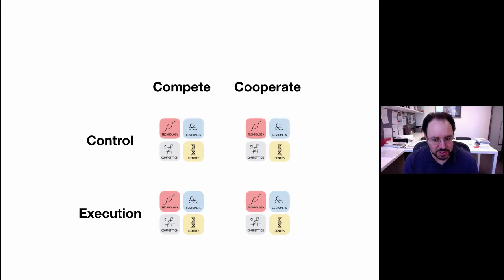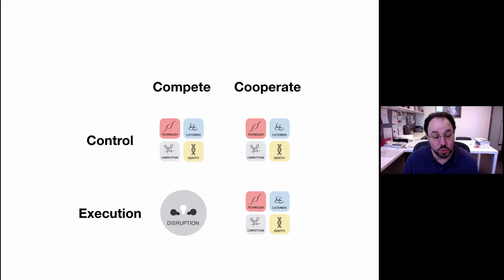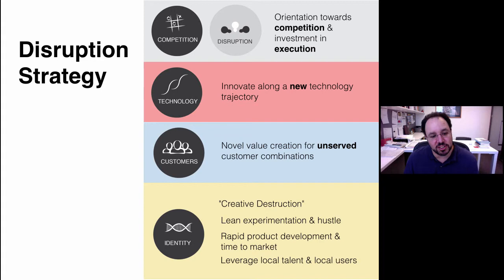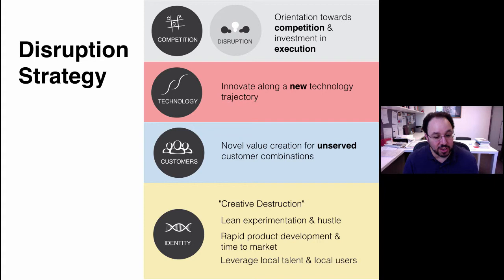So what do we call these different boxes? They all have antecedents in the business literature. When you compete and focus on execution, you are following a disruptive strategy — the typical 'I'm going to be a disruptor.' The only thing different here is that I'm suggesting it's a choice; it might not always be the best choice, which contrasts with what many others believe. This strategy involves innovating along a new technology trajectory, creating novel value for underserved customer combinations, with an identity pushing creative destruction, lean experimentation, rapid product development, and leveraging local talent and users.